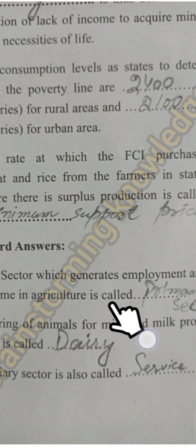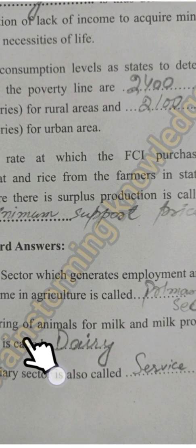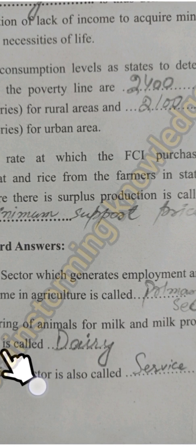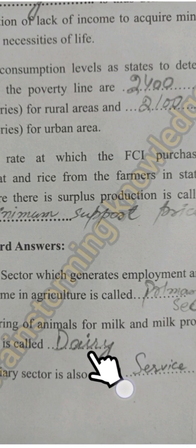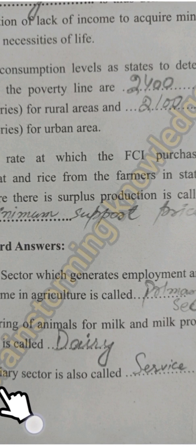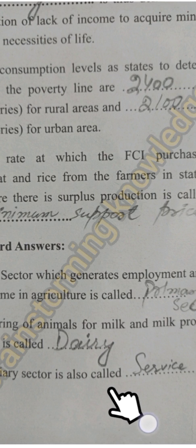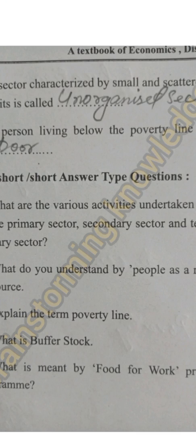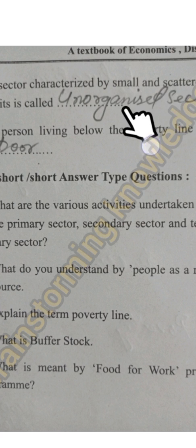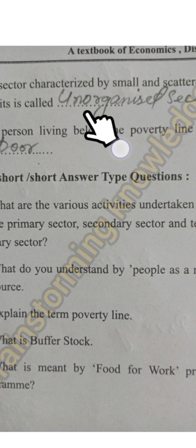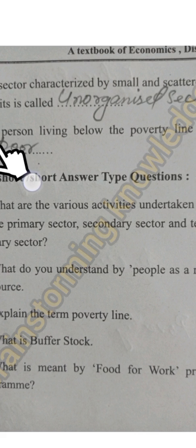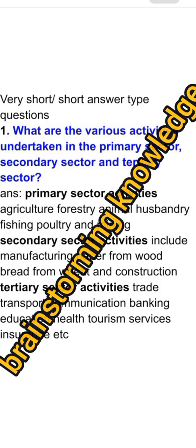Now moving to one-word answers. First, the sector which generates employment and income in agriculture is called the primary sector. Second, rearing of animals for milk and milk products is called dairy. Third, the tertiary sector is also called the service sector. Fourth, a sector characterized by small and scattered units is called the unorganized sector. Fifth, a person living below the poverty line is called poor.